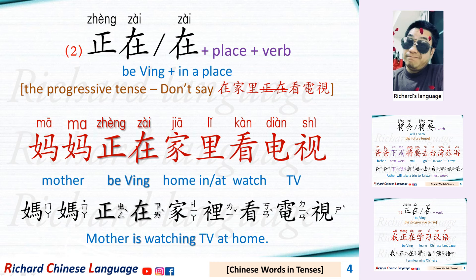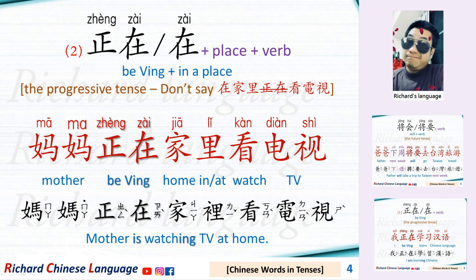正在 or 在 plus a place and then plus a verb. This is the progressive tense also. For example: 妈妈正在家里看电视 — Mother is watching TV at home. You can omit the word 正. Please don't say 妈妈在家里正在看电视 — this is wrong. We use 在 only once in a sentence.